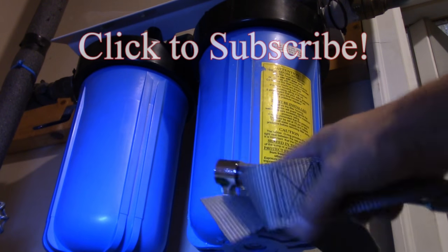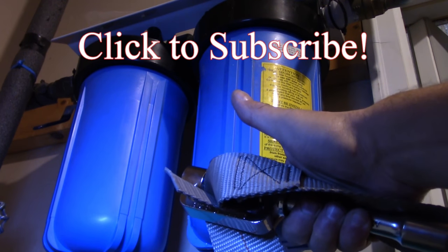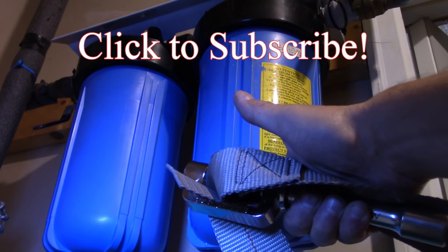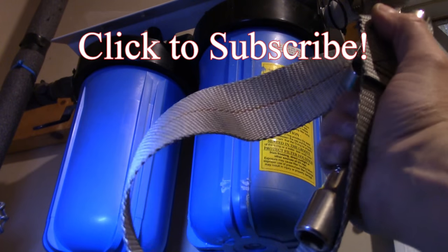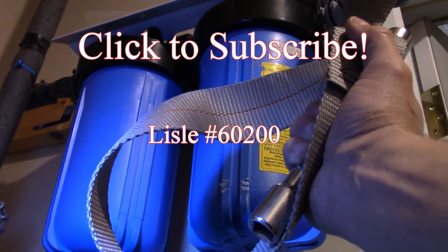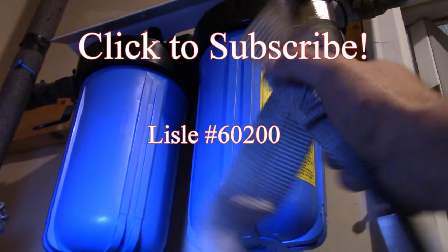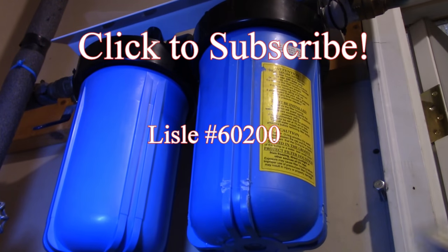So thanks for watching. Give me that thumbs up if you found this tip helpful. Don't go out and buy five of those plastic wrenches. Just buy one of these things on eBay. I'll post the part number right here. It's Lyle. I know that. And then right after this, I'm going to post the installation video where I installed these filter housings. Thanks for watching. Have fun.